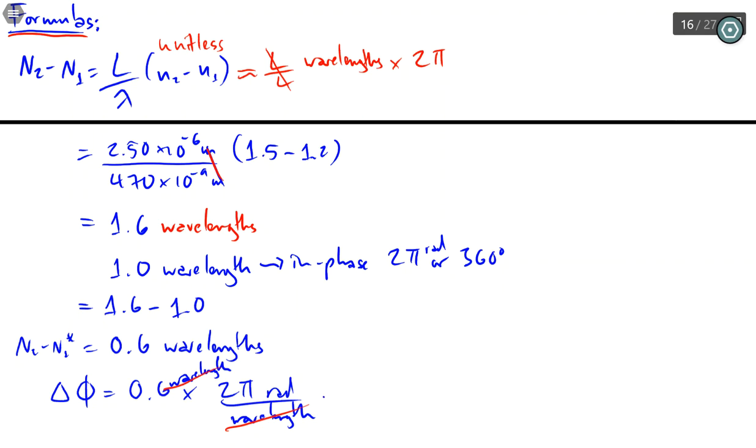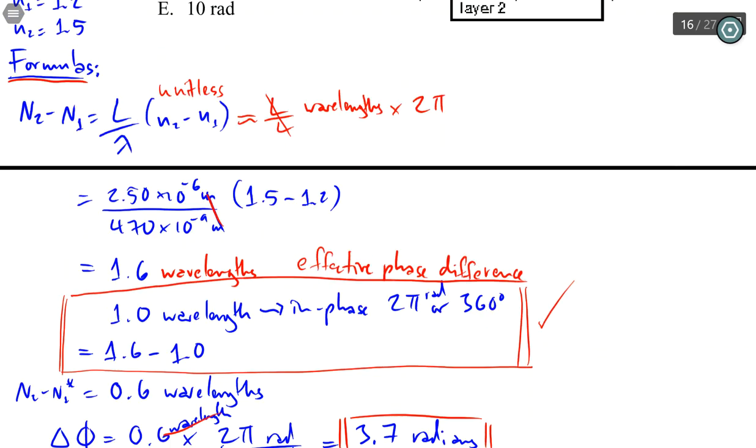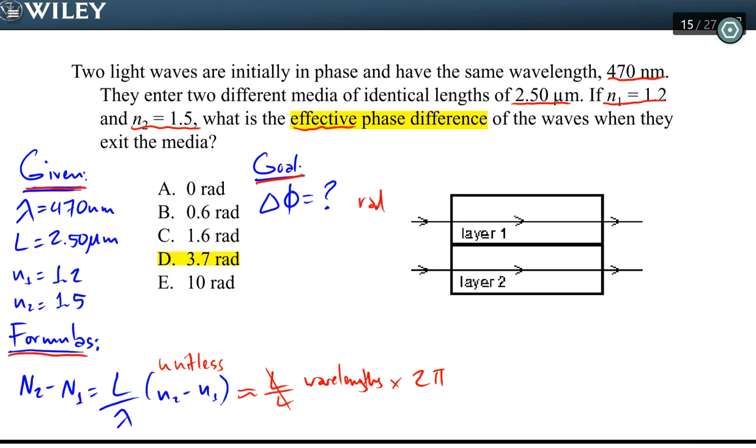And then you will get the answer of 3.7 radians. And there we go. Now, the key thing here is this: If you did not know what effective phase difference means or the understanding of how interference works, then you have no idea how to do this or you will not get the right answer. Very tricky, but simple trick. Once you know it, you can go back and try this one again. Good luck. Enjoy.